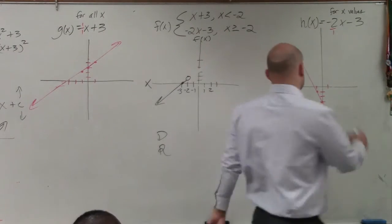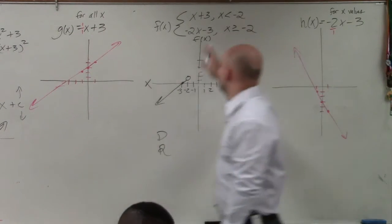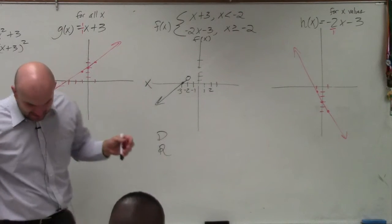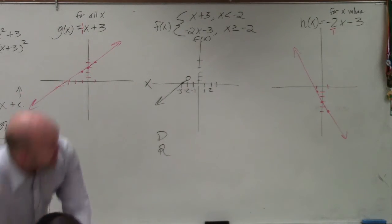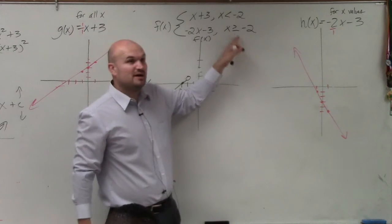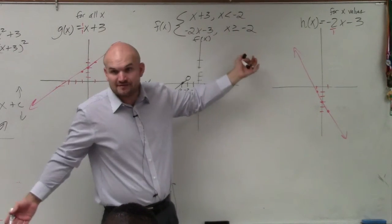Then, I have this function over here. Now, I need to graph negative 2x minus 3. So now, I have negative 2x minus 3, but I'm only graphing for x values that are greater than negative 2.